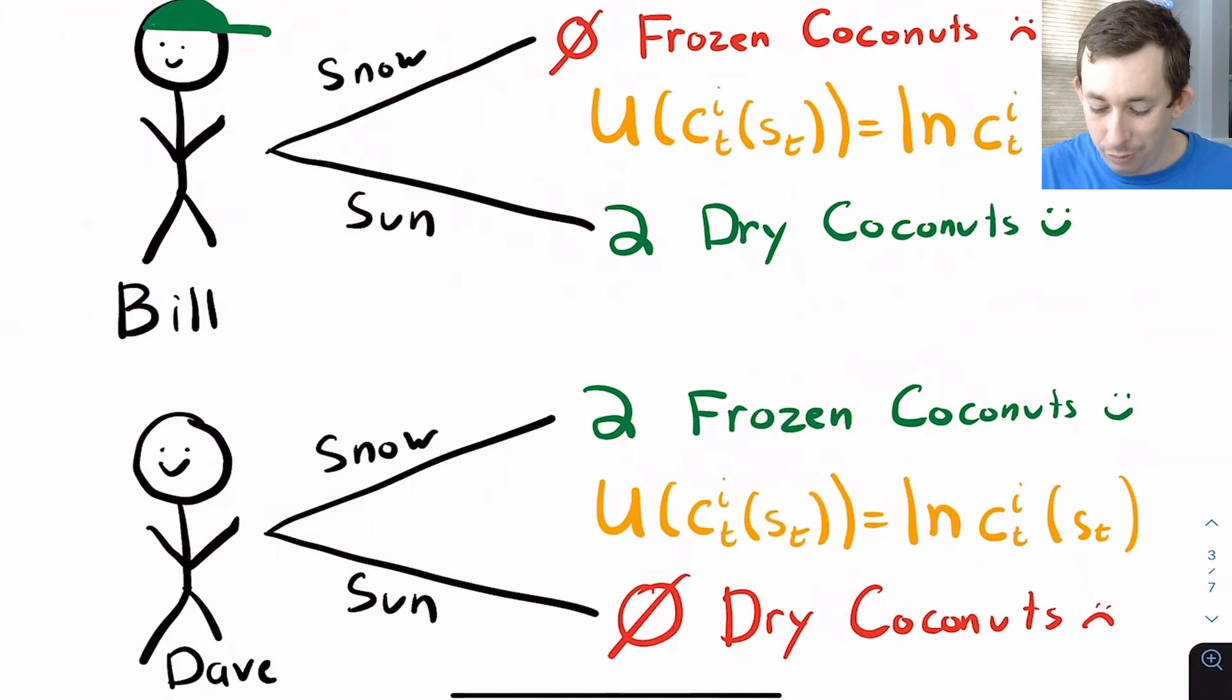Bill has zero frozen coconuts and two dry coconuts if it's sunny. Dave has two frozen coconuts and he's pretty happy when it snows. He has zero dry coconuts if it's sunny, so he's pretty sad about that. So this is how I think of their endowment.